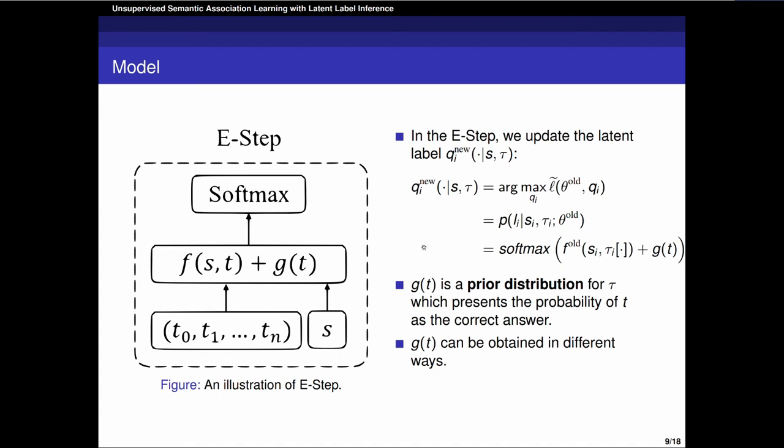In the E-step, we update Q(L given S, tau), which will be used as a latent label for updating the score function F parameters. Q is calculated by the sum of F(S, T) and G(T) through a softmax function. G is the prior distribution of T over tau, which presents the probability of the correct answer. In practice, G can be obtained from different ways. For example, in the word sense disambiguation task, WordNet offers a frequency of every gloss for a word. We can also use the result of another unsupervised method as G.